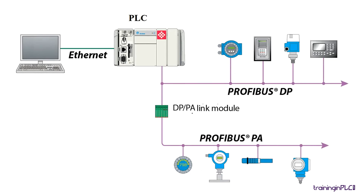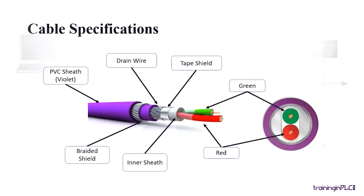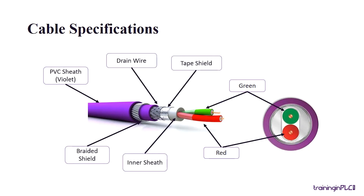PROFIBUS cable has two wires — red and green — covered with an inner sheath with tape shield, and a drain wire covered with braided shield, and all these are covered with an outer PVC sheath. The PROFIBUS cable is identified by its color, which has a standard color code that is violet.